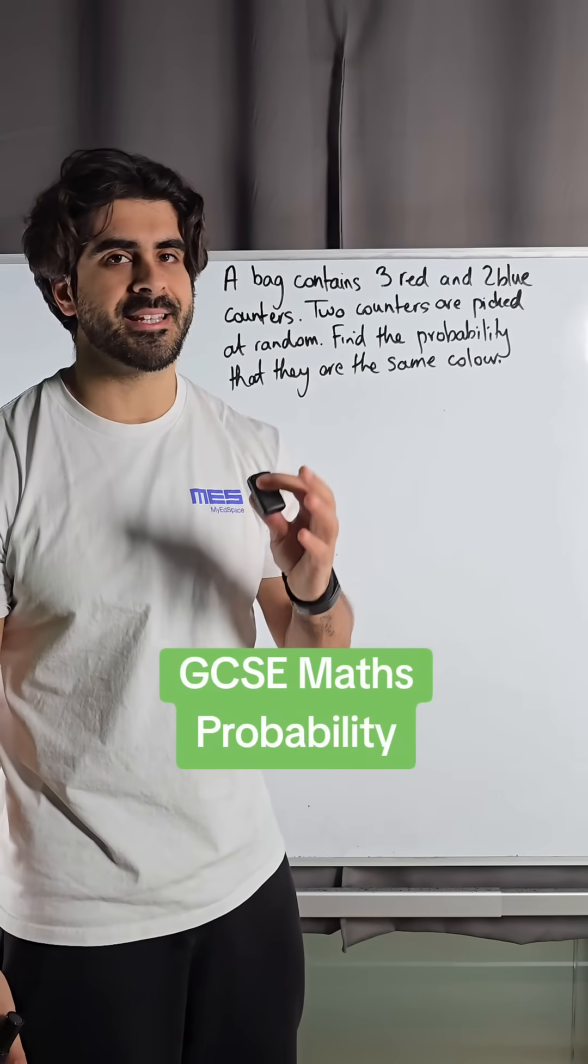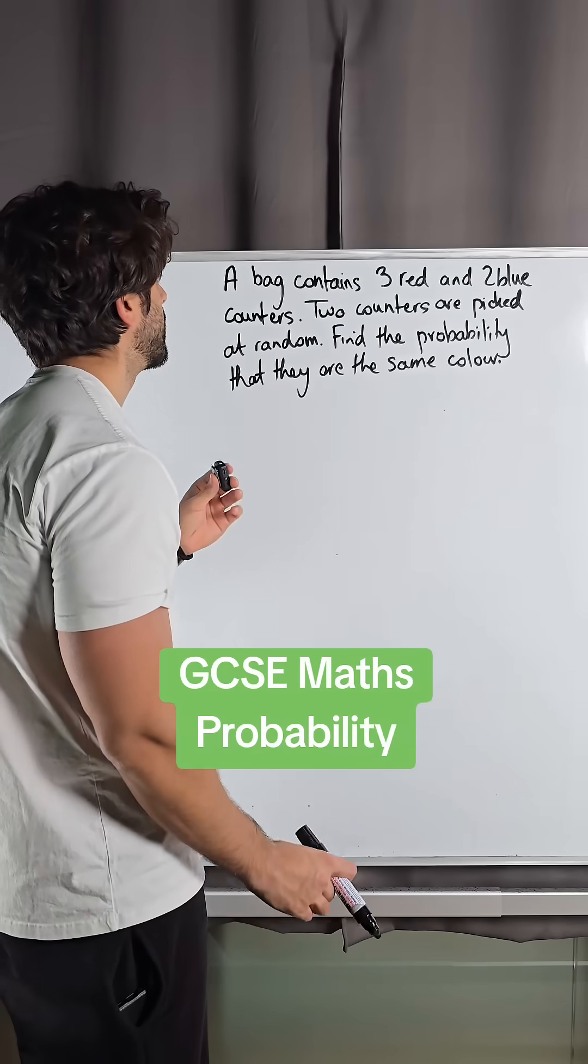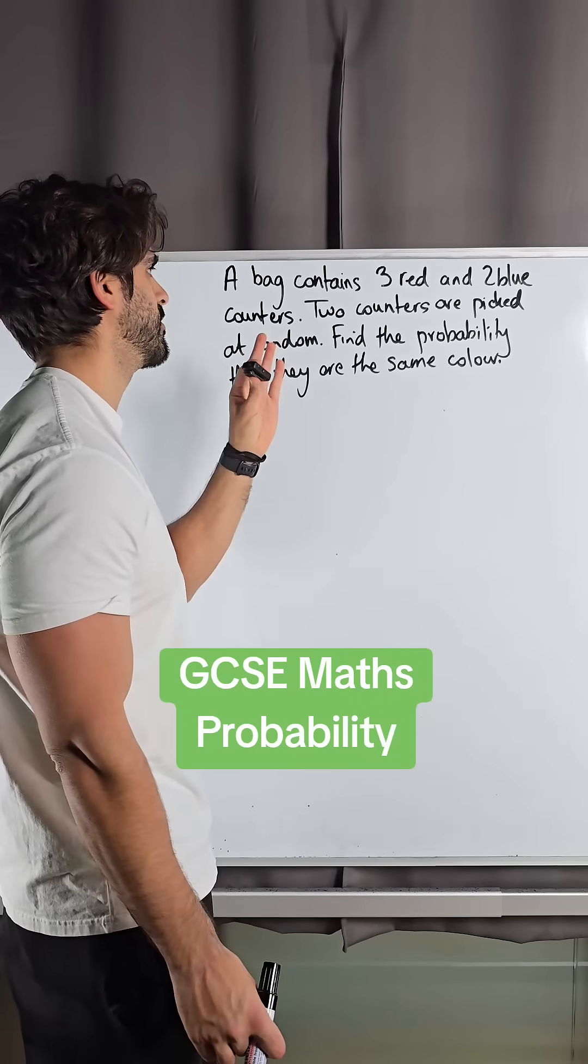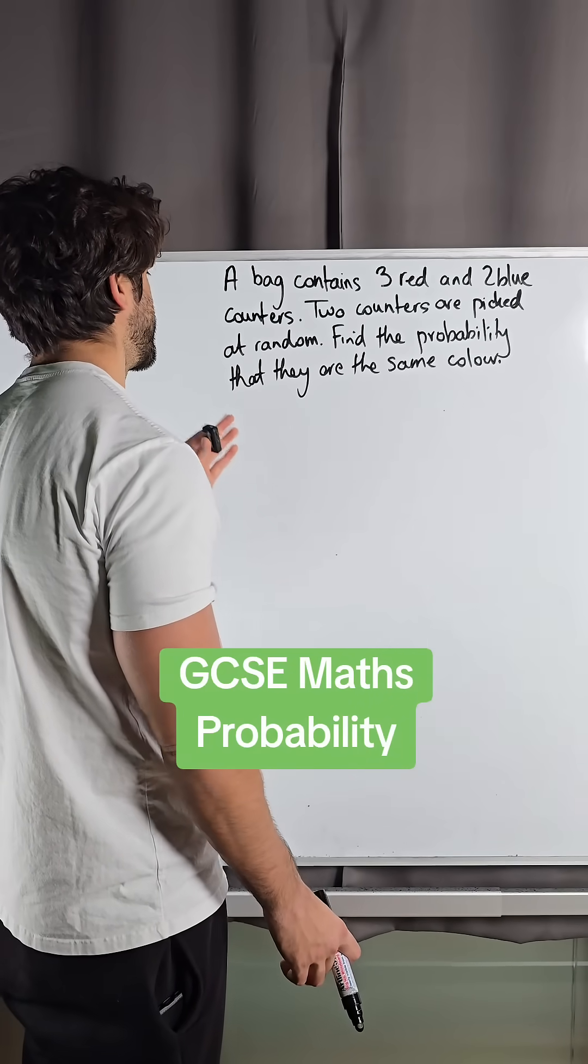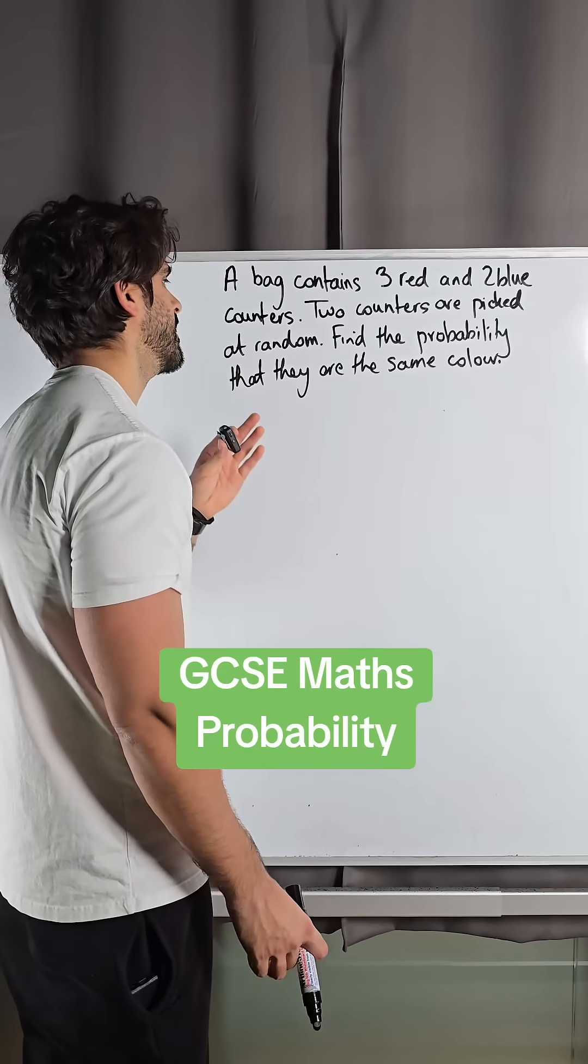Let's see, probability - we haven't done in a while, so let's have a go. It says a bag contains three red and two blue counters. Two counters are picked at random. Find the probability that they are the same color.